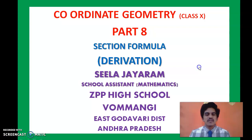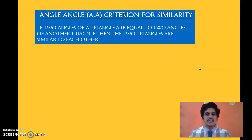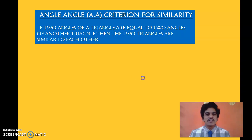Now in this part, we are going to actually derive that formula which is called the section formula, and you will enjoy and have fun while deriving this formula. Now let us recall once again the angle-angle criteria of similarity for triangles: if two angles of one triangle are equal to two angles of another triangle, then the two triangles are similar to each other.